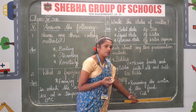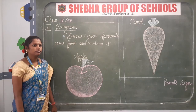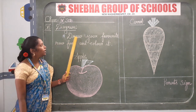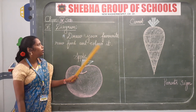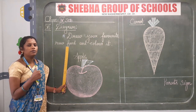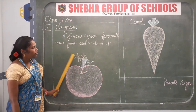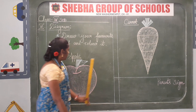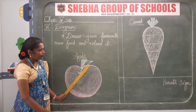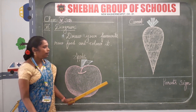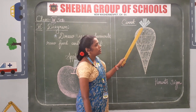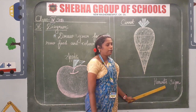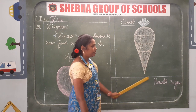After finishing the question, you must draw a line. Next, we move to the sixth Roman numeral: diagram. Draw your favourite raw food and colour it. We will draw apple and carrot. Apply red and green colour for apple, and orange and green colour for carrot. Also write and get a parent's signature — it is very important. After finishing, draw a line.